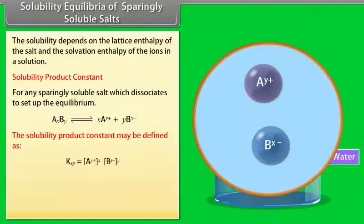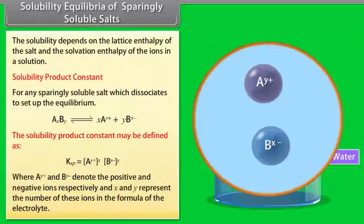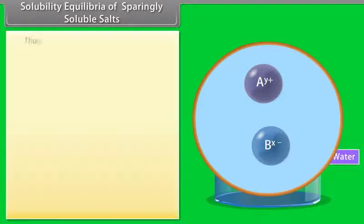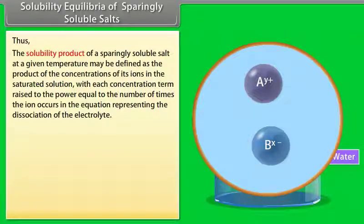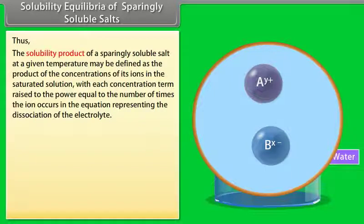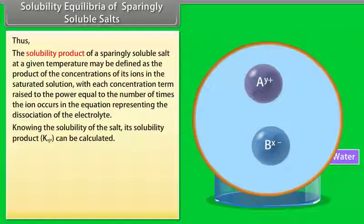The solubility product constant Ksp is defined as [A^(Y+)]^X × [B^(X−)]^Y, where A^(Y+) and B^(X−) denote the positive and negative ions respectively, and X and Y represent the number of these ions in the formula of the electrolyte. Thus, Ksp at a given temperature is the product of the concentrations of its ions in the saturated solution, each raised to the power equal to the number of times that ion occurs in the dissociation equation.